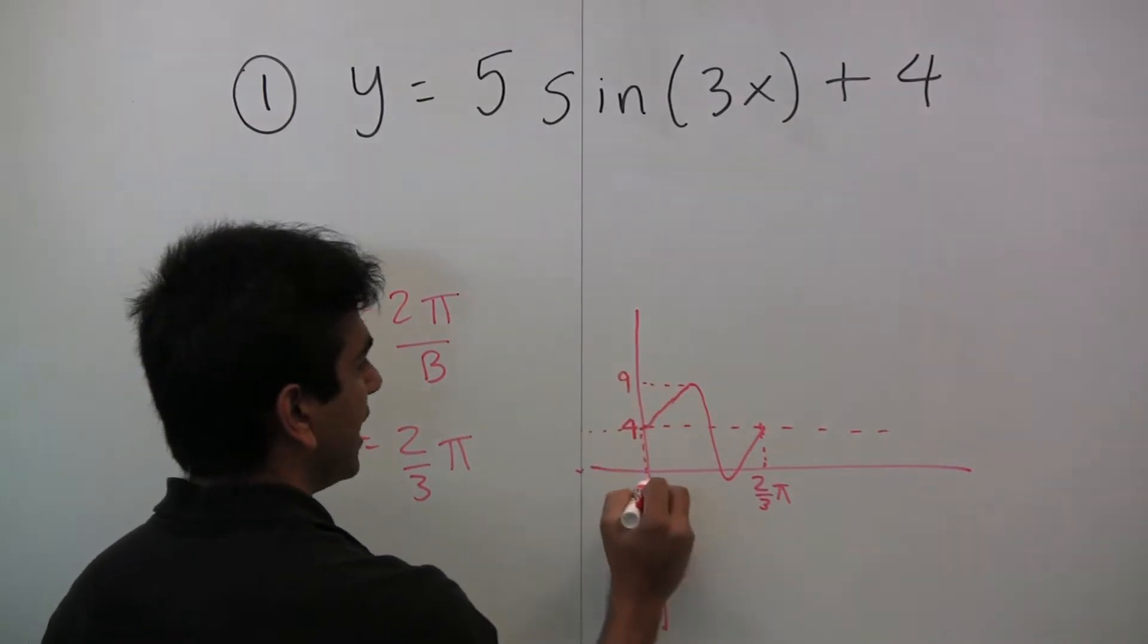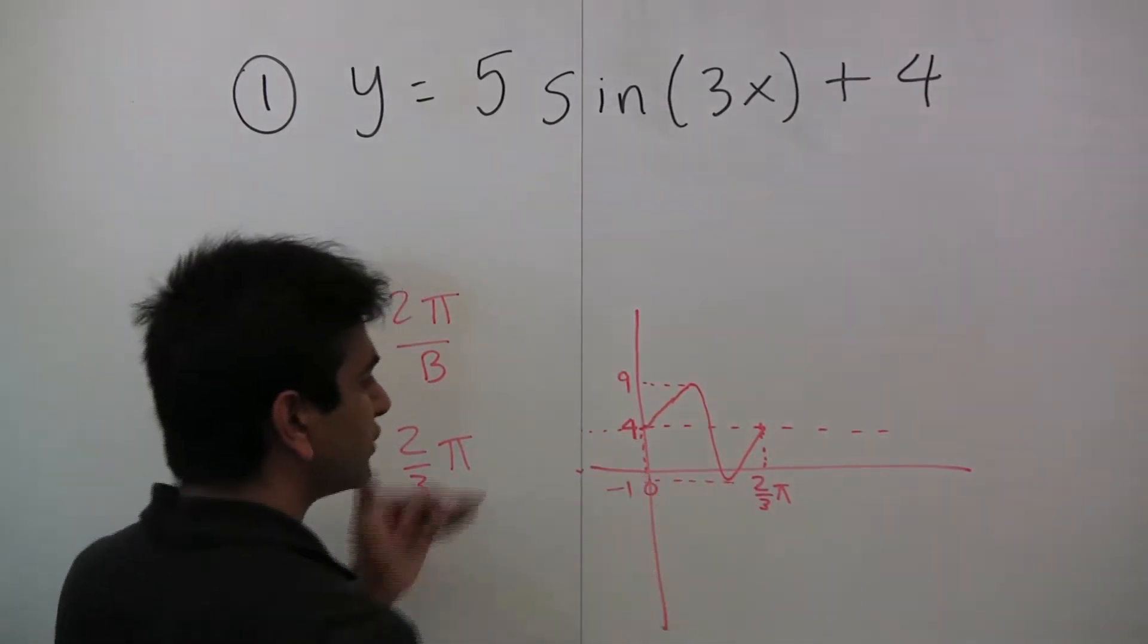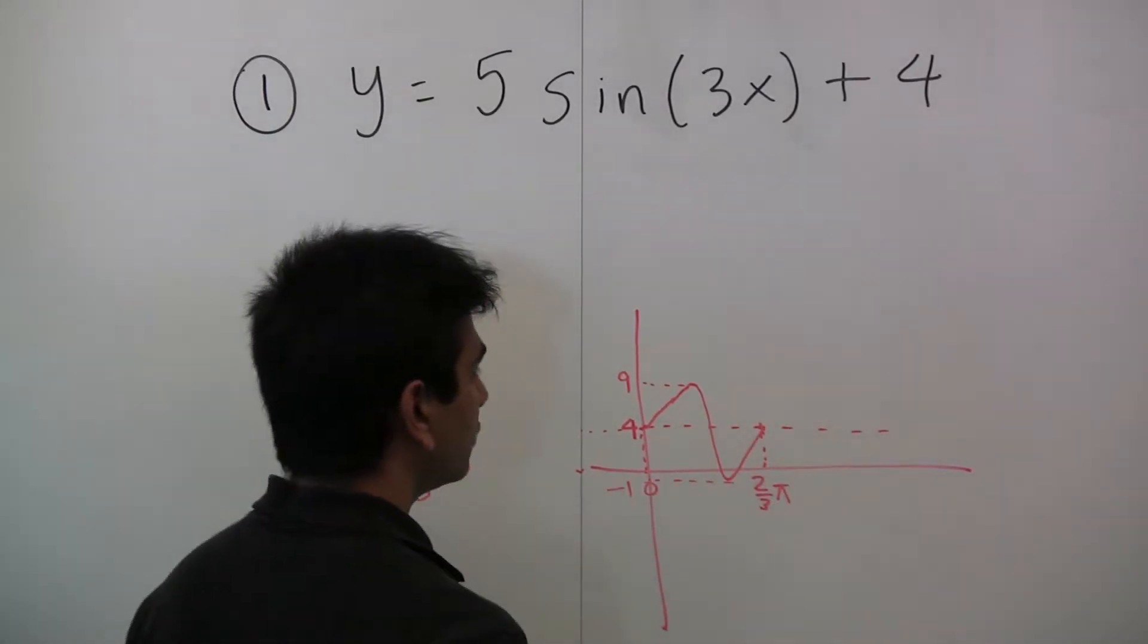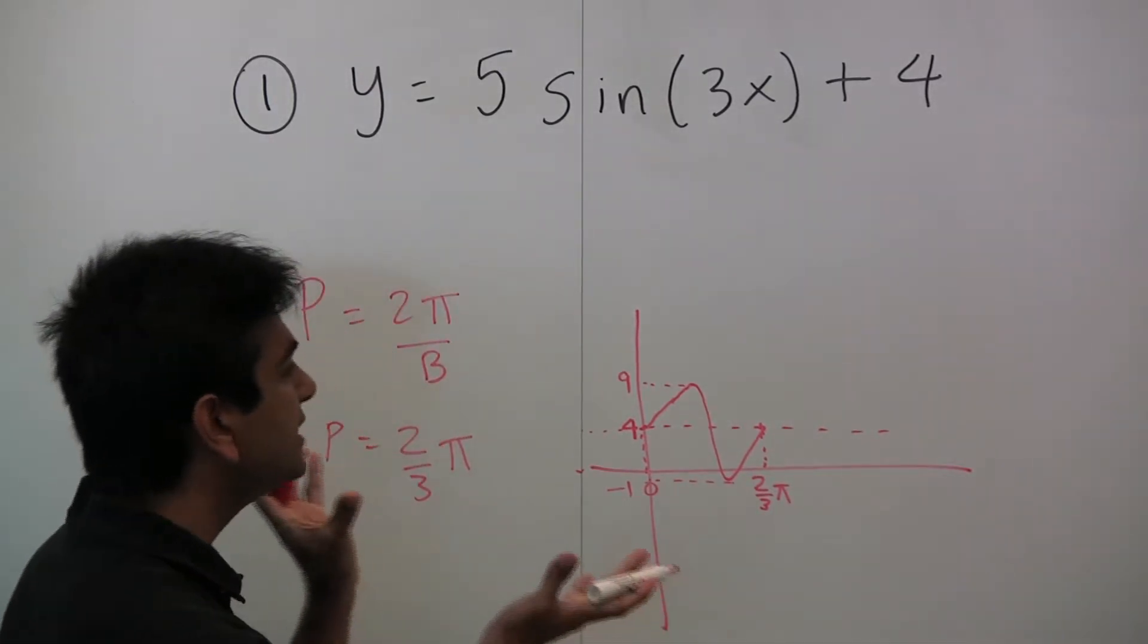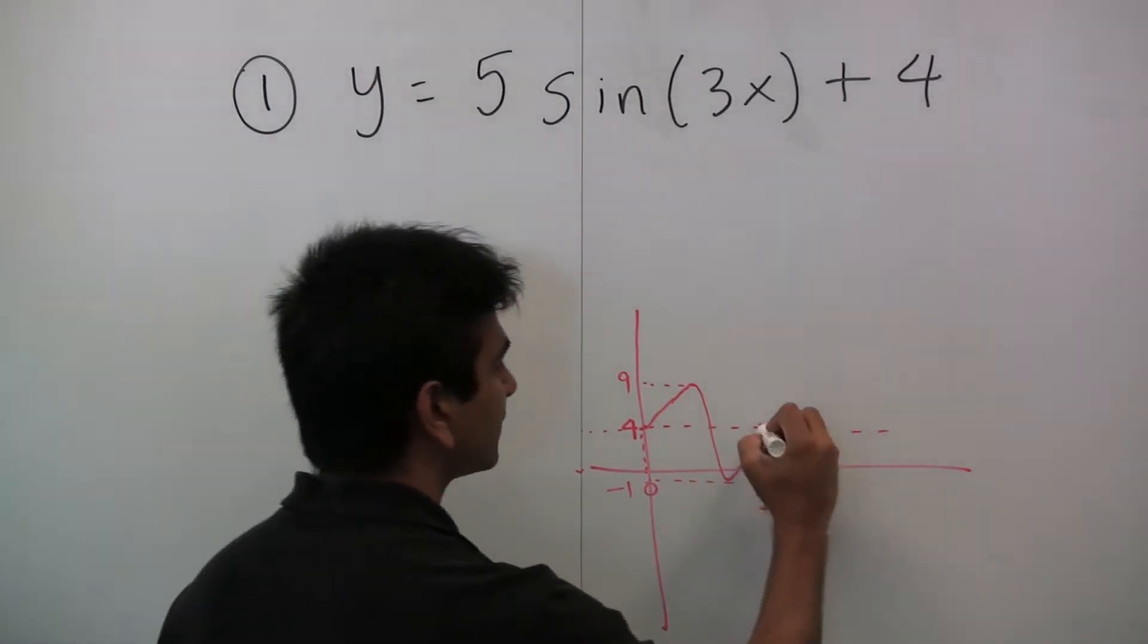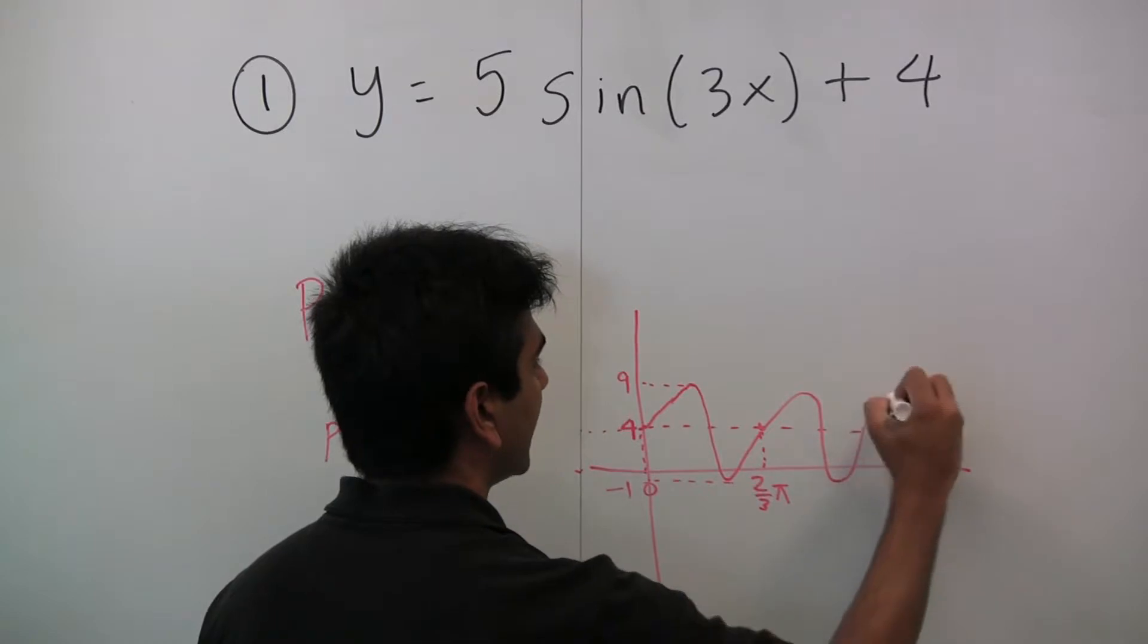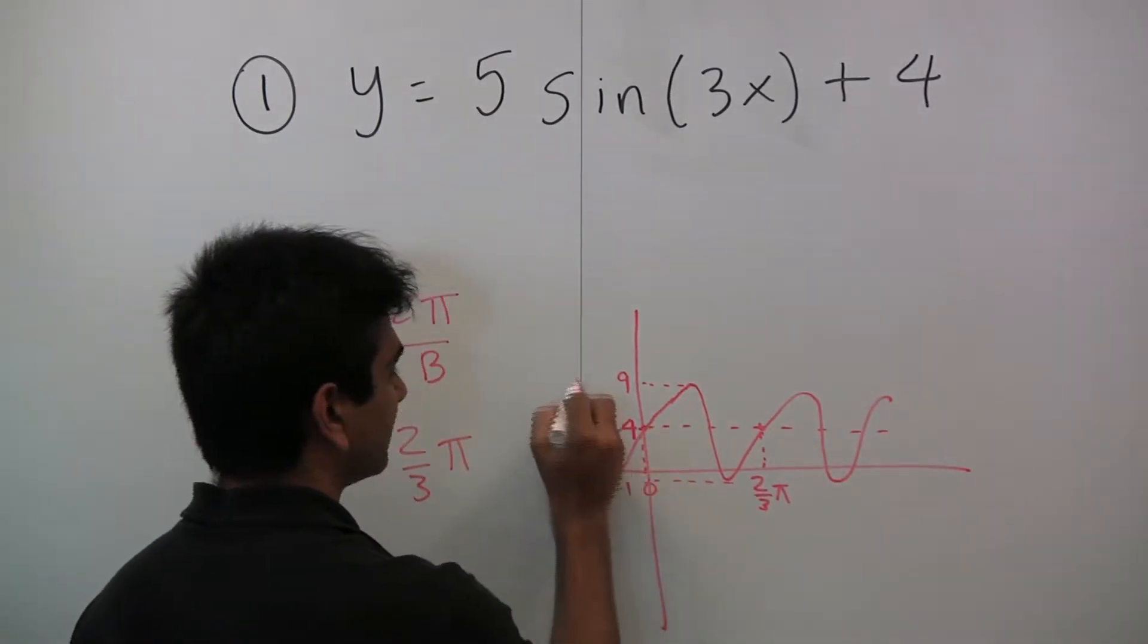This will be 9, and this will be negative 1. Those are the extreme values. This is effectively the graph of the function. From here, we can just extend it because we know it's periodic and backwards like this.